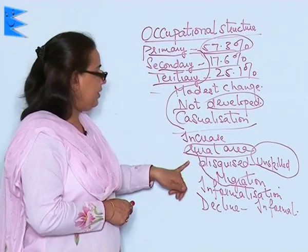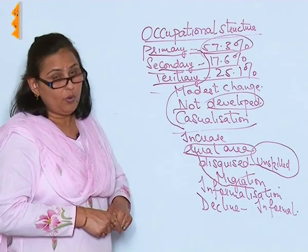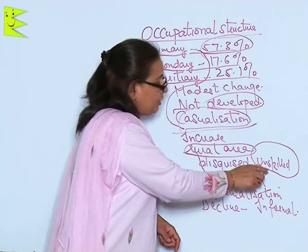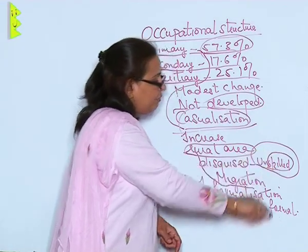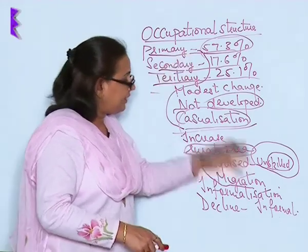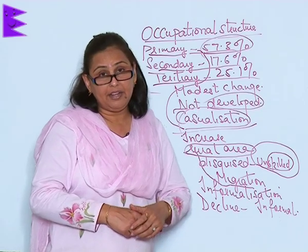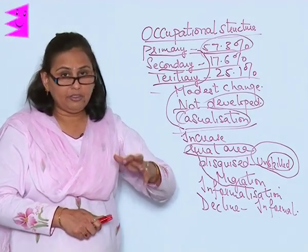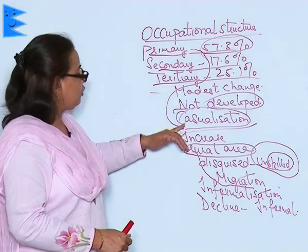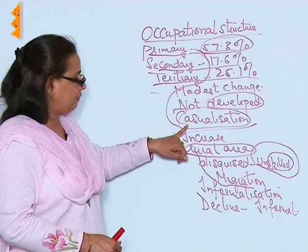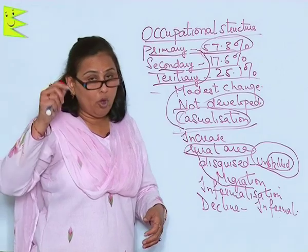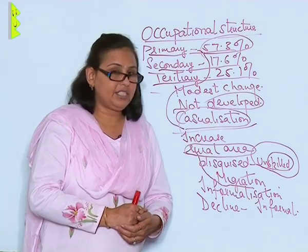This is surely not a good sign. To decrease casualization, we need a skilled workforce. But our education system does not provide any skills to the people — it is mere theory and rote learning. That is why there is so much casualization. Thus, both migration and the education system of the country have increased casualization.